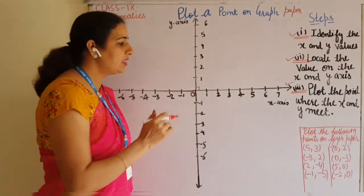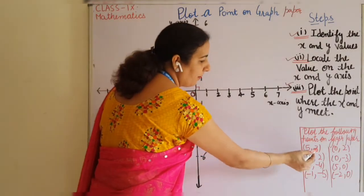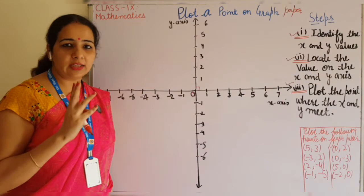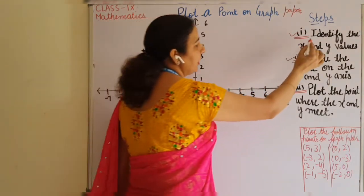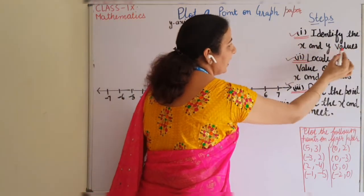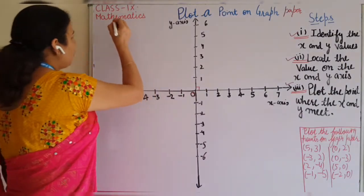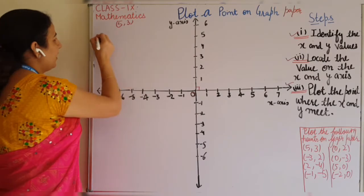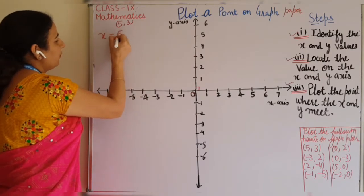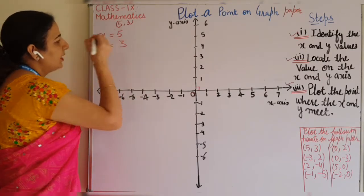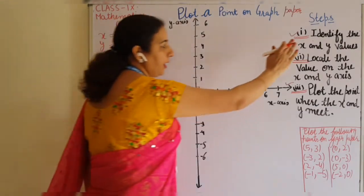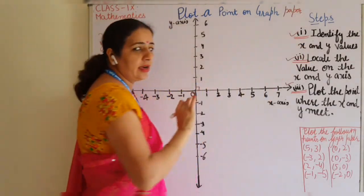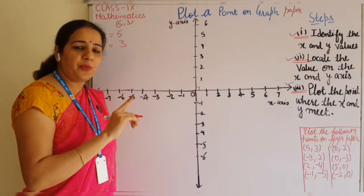The first point I have taken is (5, 3). I am going to apply all three steps to this example. The first step is: identify the x and y values. So for (5, 3), x is 5 and y is 3. First step is completed — we have identified x and y. X means the first value and y means the second value.